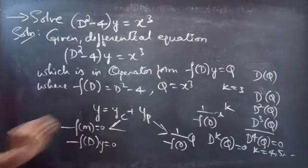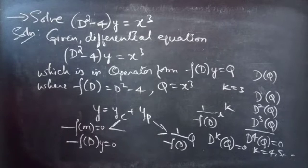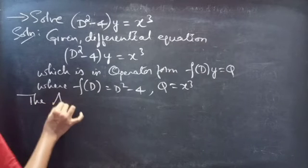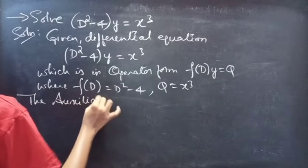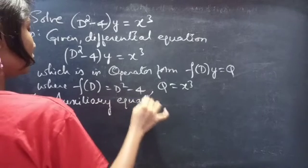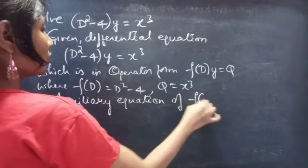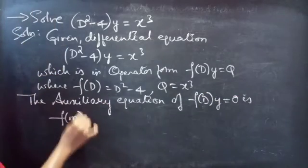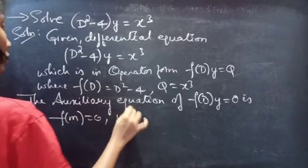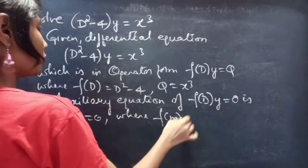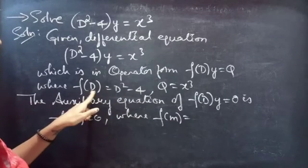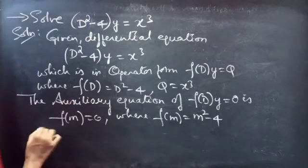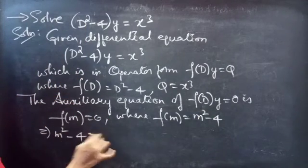So firstly, let us find yc using the roots of the auxiliary equation. The auxiliary equation of f(D) into y equals 0 is f(m) equals 0. Here f(D) equals D squared minus 4, so we replace the differential operator by m to get f(m) equals m squared minus 4. Our auxiliary equation becomes m squared minus 4 equals 0.